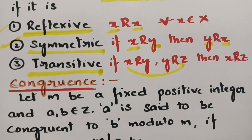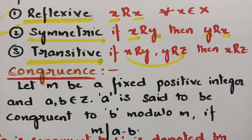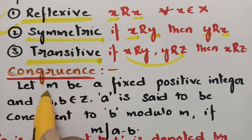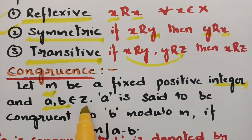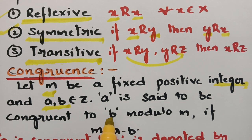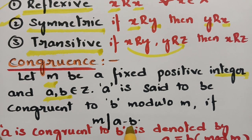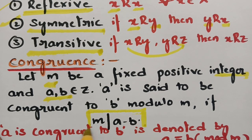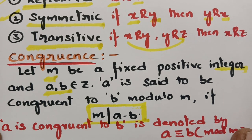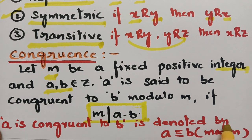The next definition is congruence. Let m be a fixed positive integer, and let a, b belong to Z. Then we say that a is congruent to b modulo m if m divides a minus b. If m divides a minus b, we say that a is congruent to b mod m, and this is denoted as a ≡ b (mod m).